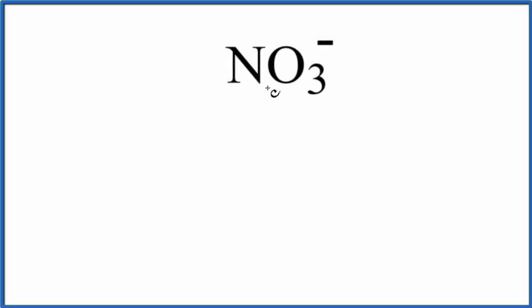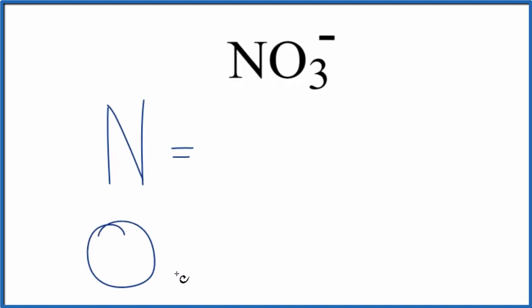In this video we're going to figure out the number of atoms in NO3-. This is the nitrate ion. So let's first write down each element. We have nitrogen and we have oxygen.